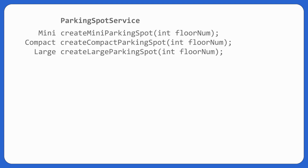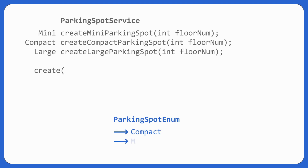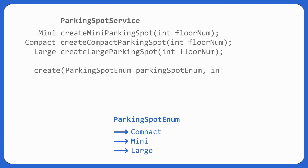We should optimize it. Let's have a single method called `create` that takes some value indicating which type to create — mini, compact, or large. We can use an enum for this: a parking spot enum with values compact, mini, and large. So we'll pass the parking spot enum and floor number to this method.